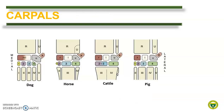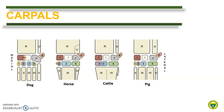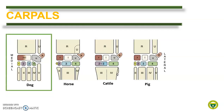For the carpus, let us compare by identifying the present and absent carpal bones per species, using the pig as our reference. There are two rows of carpal bones — the proximal and the distal rows. At the proximal row are the radial carpal bone, intermediate carpal bone, ulnar carpal bone, and the accessory carpal bone. At the distal row are the first, second, third, and fourth carpal bones. In pigs, all these carpal bones are present for a total of eight. In dogs, the radial carpal bone and the intermediate carpal bone are fused, and the rest are present, giving a total of seven carpal bones.